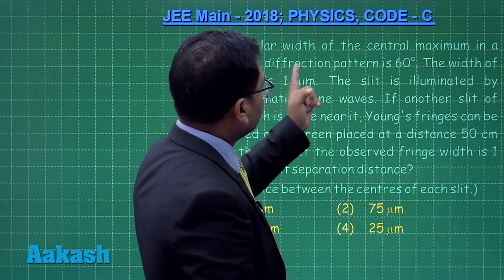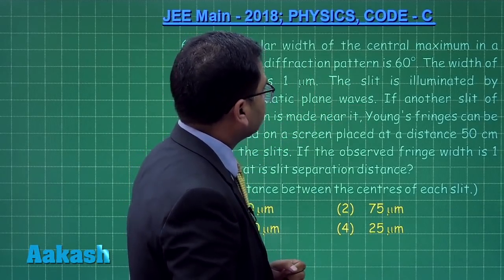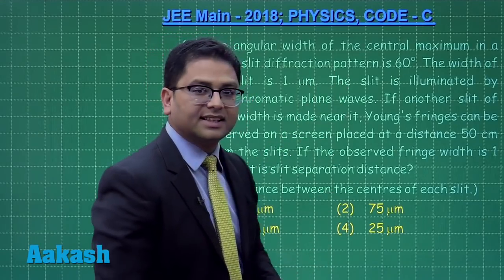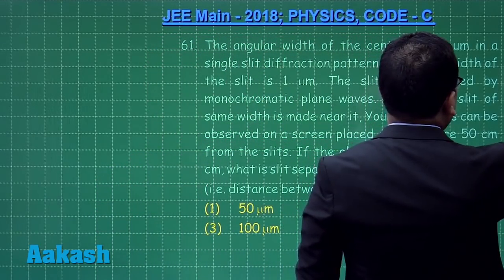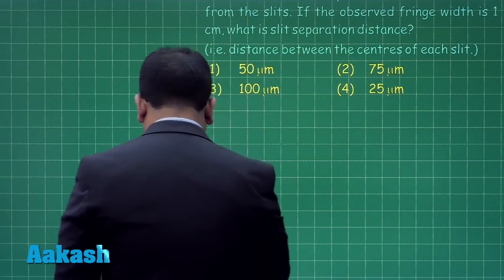Let us begin. The question is from diffraction, and it says the angular width of the central maximum in a single slit diffraction pattern is 60 degrees. On the basis of this particular data, I can come to some conclusions.